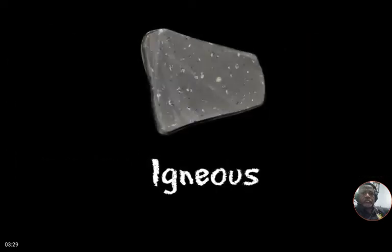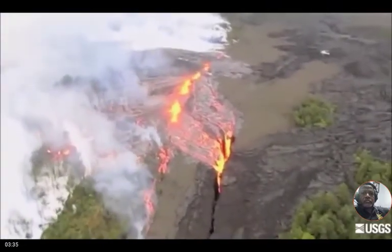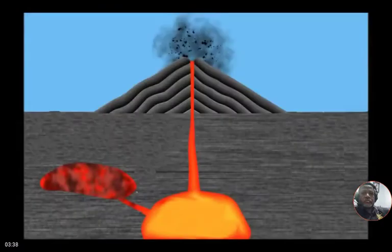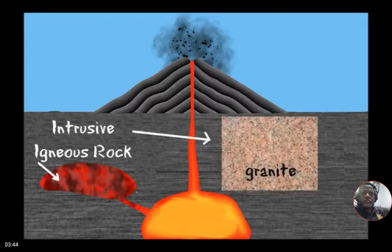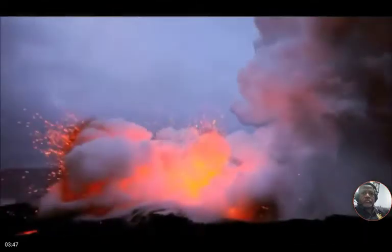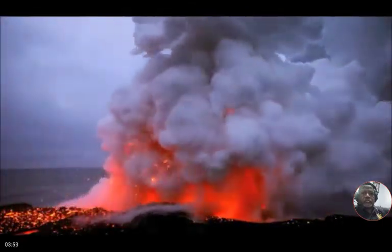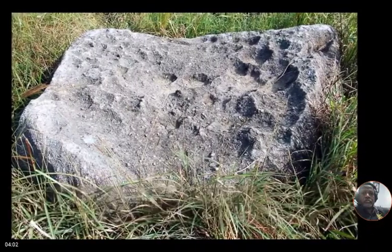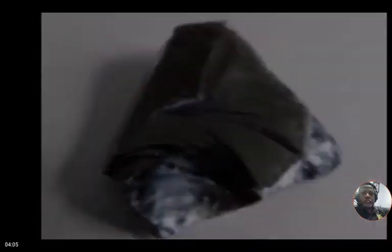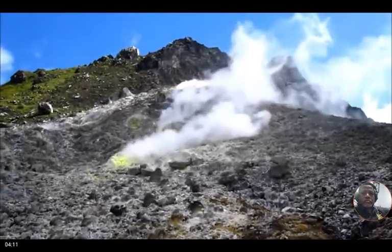Igneous is a word that means fiery. Igneous rock is formed when magma or lava cools. Sometimes magma cools slowly underneath the earth's surface, forming intrusive igneous rock like granite. Other times, lava cools when it comes to the surface in a volcanic eruption, forming extrusive igneous rock. Some examples of extrusive igneous rock are tuff, obsidian, and pumice. Igneous rocks make up about 95 percent of the earth's crust.